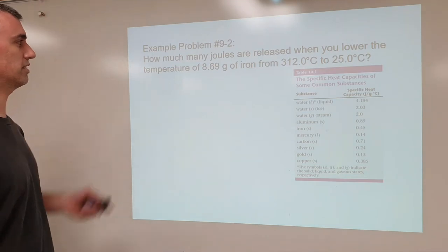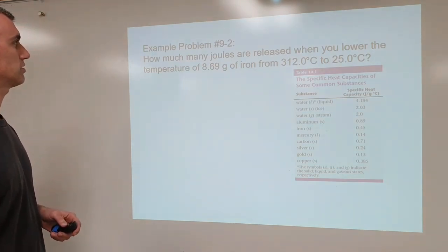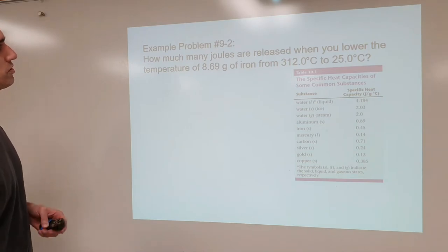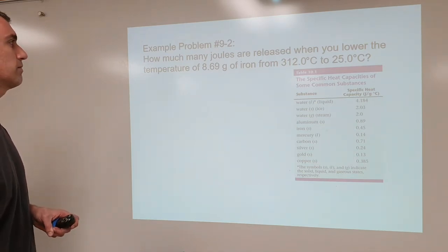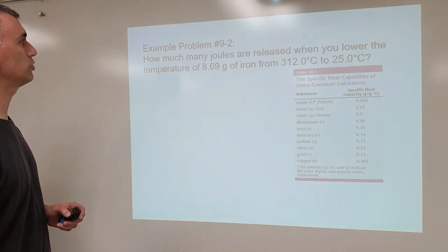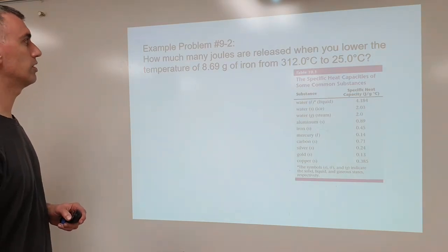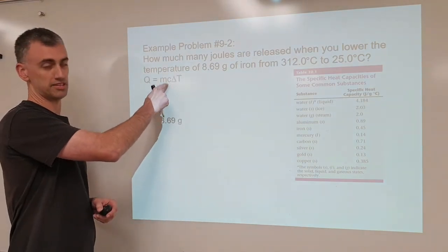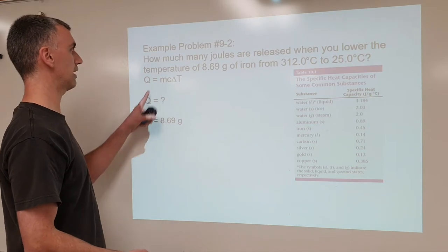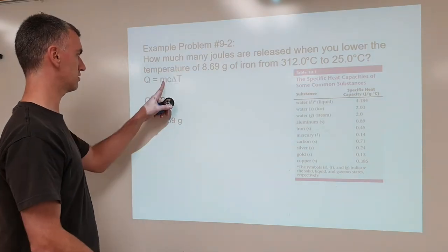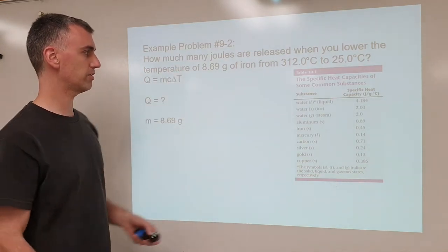Let's move on to example problem 9-2. How many joules are released when you lower the temperature of 8.69 grams of iron from 312 to 25.0 degrees Celsius? It asks for energy and gives you different temperatures, so you know you're using Q equals mc delta T. Write this down, then go define your variables. The mass is given. Your c comes from the chart — 0.45, joules per gram degree Celsius. That's how you know you'll get joules for your answer.